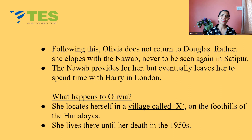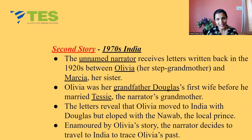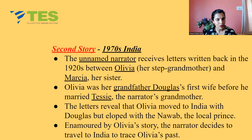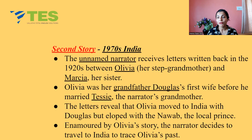Now for the second story, which runs parallelly in the 1970s. The unnamed narrator — referred to as Anne in the movie — receives letters from Harry, a family friend. These letters are written back in the 1920s between Olivia and her sister Marcia. Olivia is the narrator's step-grandmother, meaning Douglas is the narrator's grandfather. Douglas's first wife was Olivia, and after she left, he married Tessie, the narrator's grandmother. These letters reveal that Olivia moved to India with Douglas but eloped with the Nawab, the local prince.